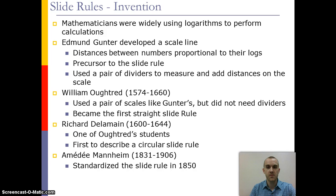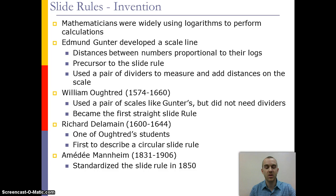As people started to use tables, they decided there had to be quicker ways to use logarithms, and one of those was the slide rule. Edmund Gunter developed a scale line that made the distance between two numbers proportional to their logs, which started the idea of the slide rule. Then William Oughtred used a pair of scales like Gunter's but without dividers, and that became the first actual slide rule, which continued to be improved until a standardized version appeared in 1850.